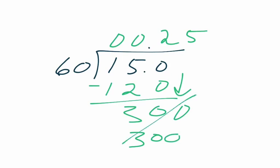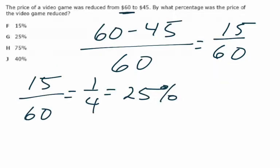And you would get .25, which of course, you need to turn into a percent by moving two spaces to the right. So 25% is going to be the percent change between $60 and $45.